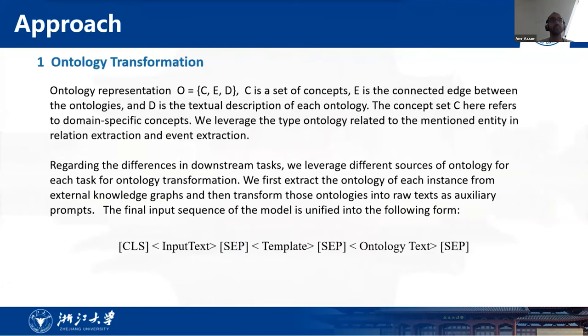In this paper, the ontology representation is denoted as O. C is a set of concepts, E is the connected edge between the ontologies, and D is the textual description of each ontology. The concept set here refers to domain-specific concepts. For example, we leverage the type ontology related to the mentioned entity in relation extraction and event extraction. We utilize the domain, which is the head entity types, and range, which is the tail entity types constraints in knowledge graph completion. Regarding the differences in downstream tasks, we leverage different sources of ontology for each task. For ontology transformation, we first extract the ontology of each instance from external knowledge graphs and then transform those ontologies into raw text as auxiliary prompts. The final input sequence of the model is unified into the following form.